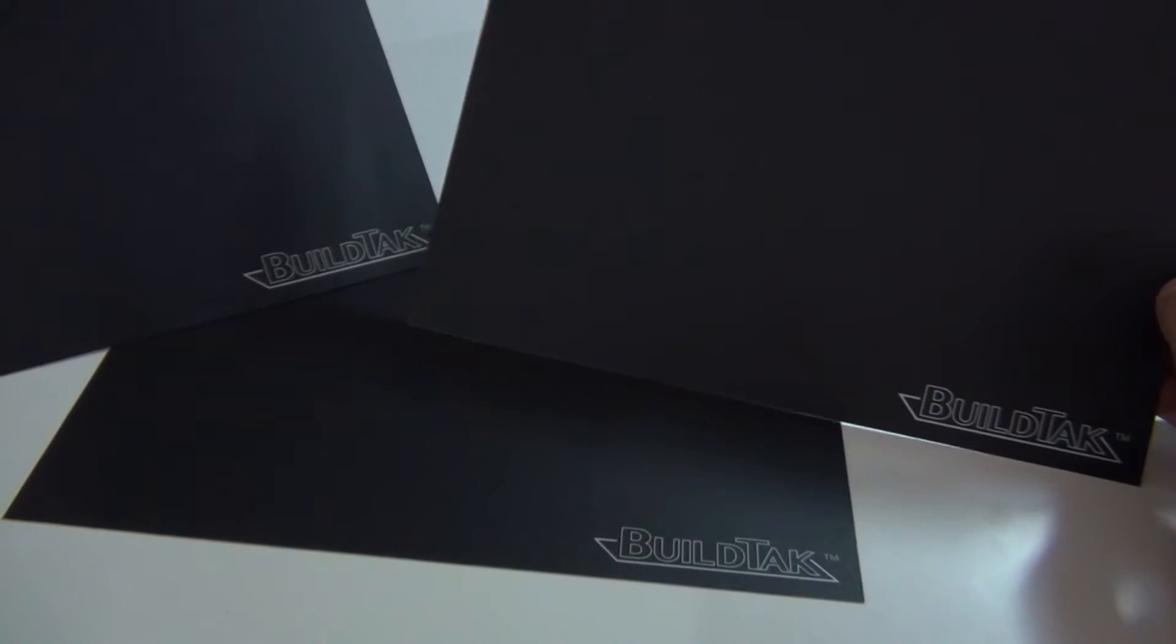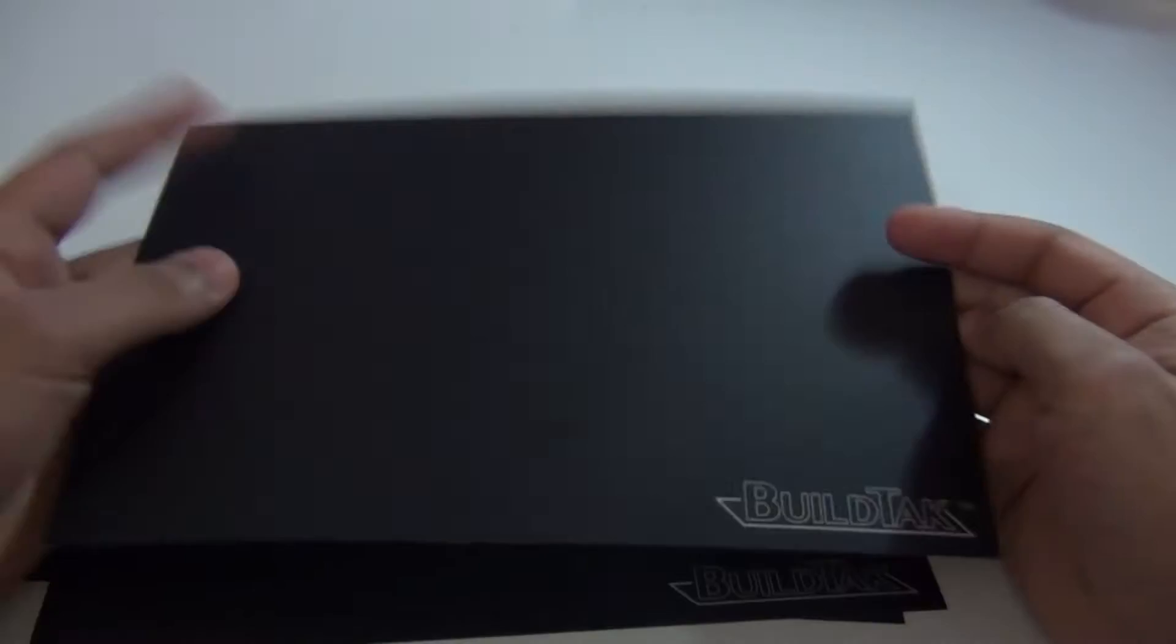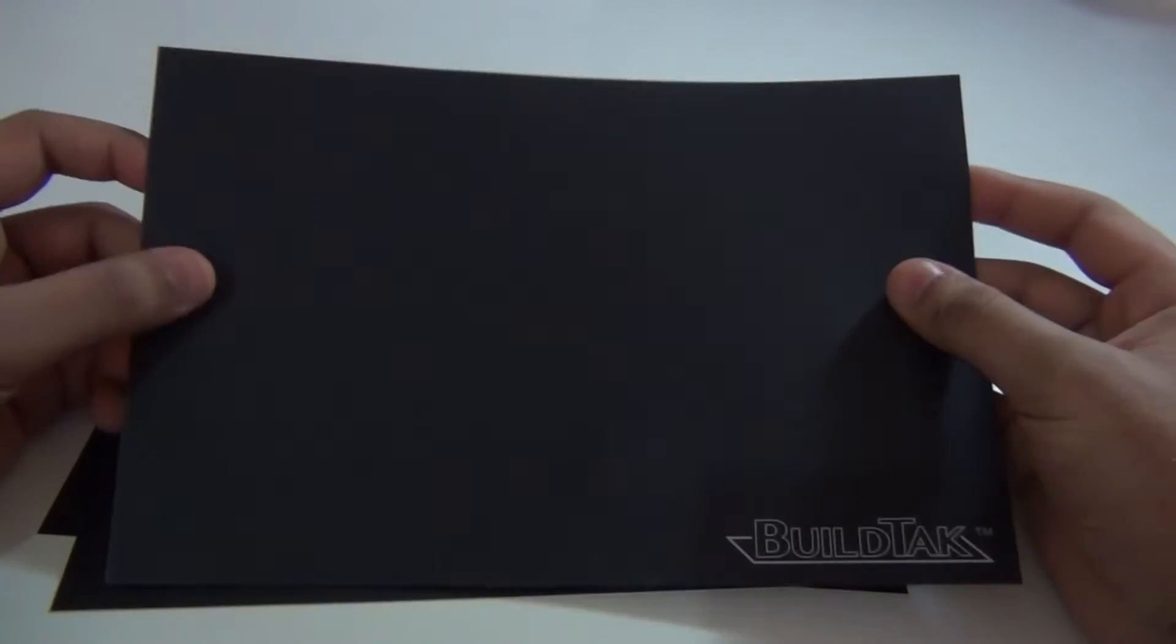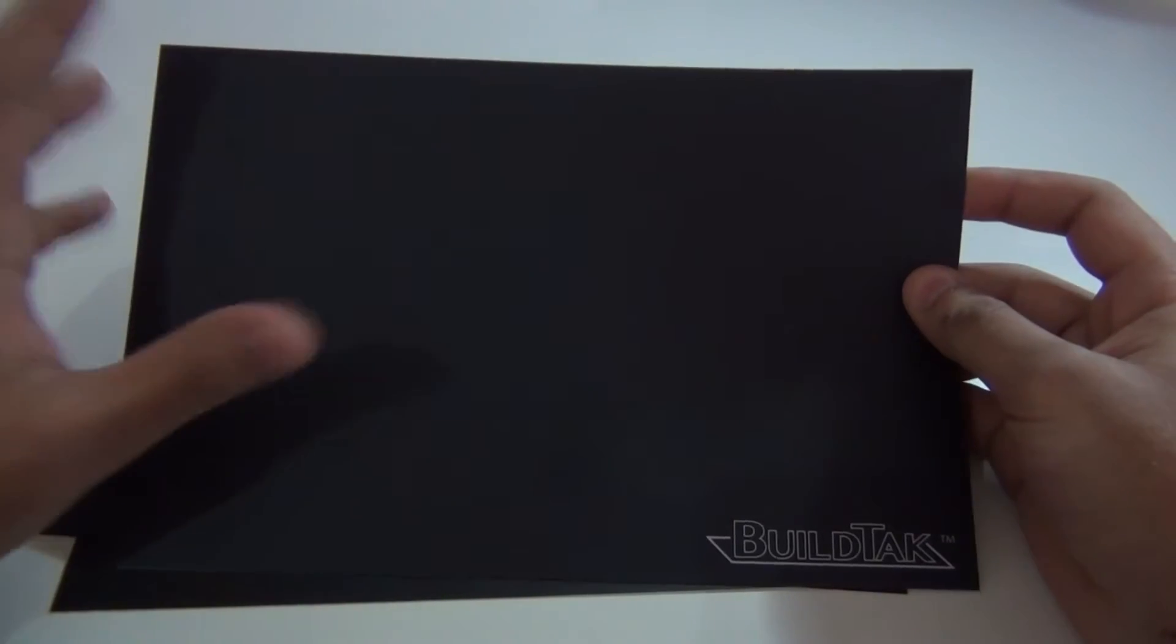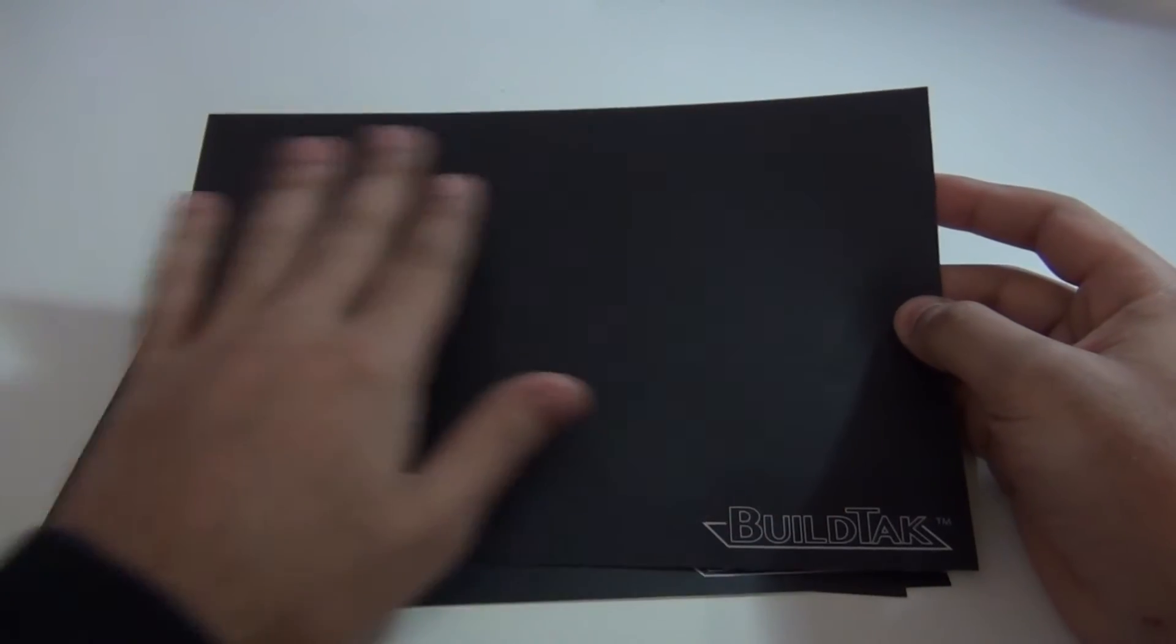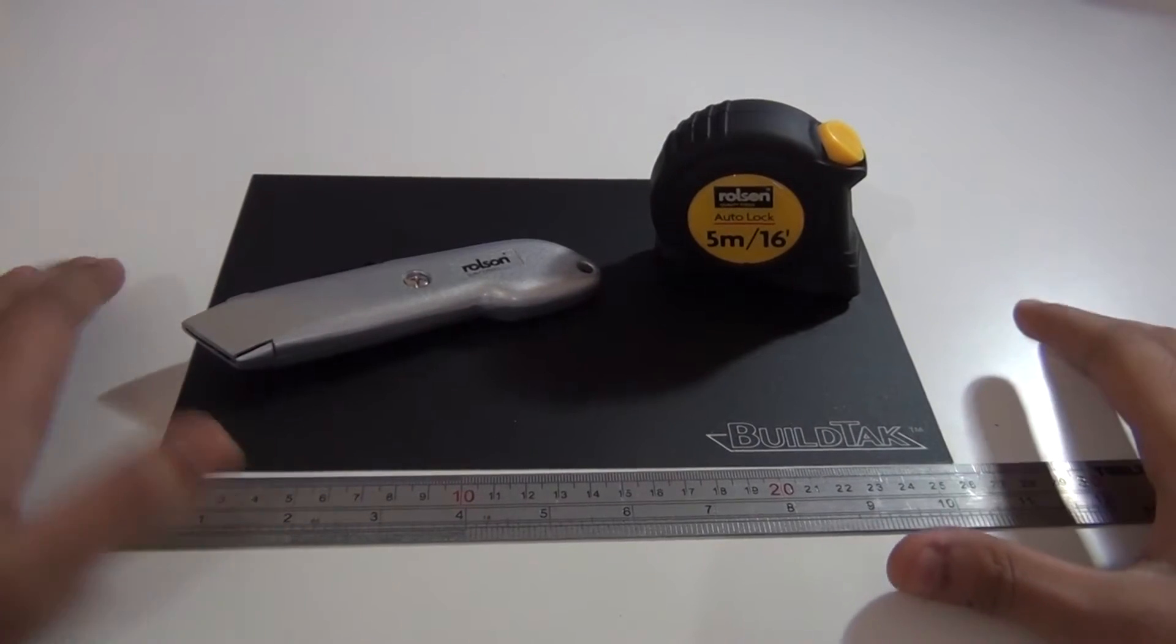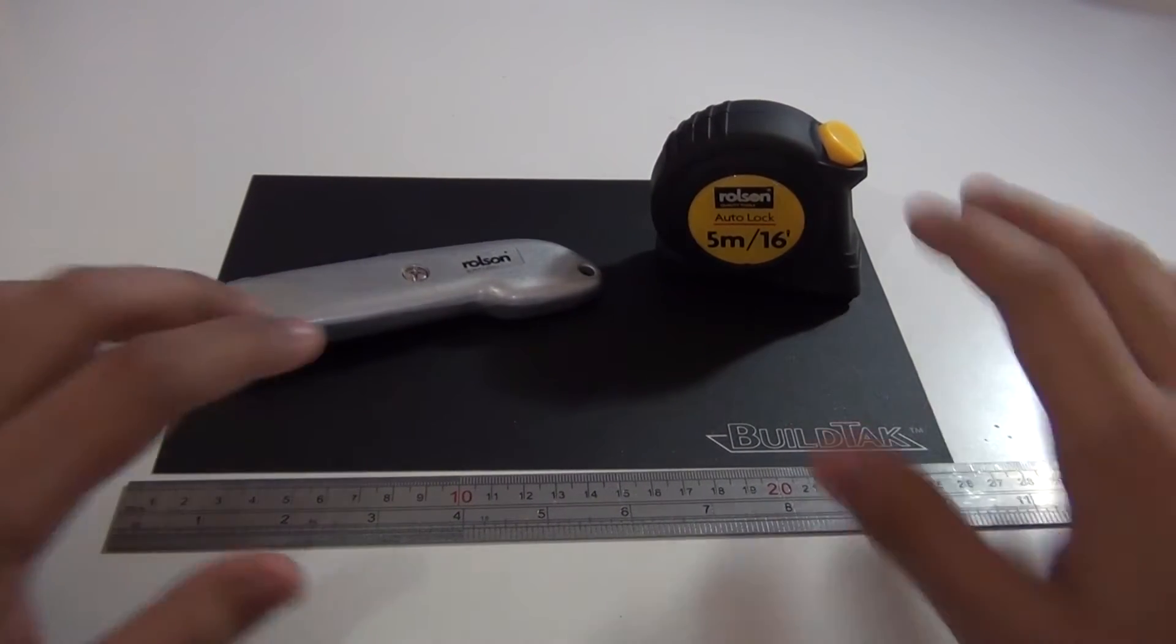I've got three of them, the BuildTak print bed. I've used these before and these are brilliant, they absolutely print so well. Surfaces stick, I've never really had to put any kind of treatment on them, you just stick them in and that is it. So here are some things that you might need: a Stanley knife and some sort of measuring device like a ruler or a measuring tape.